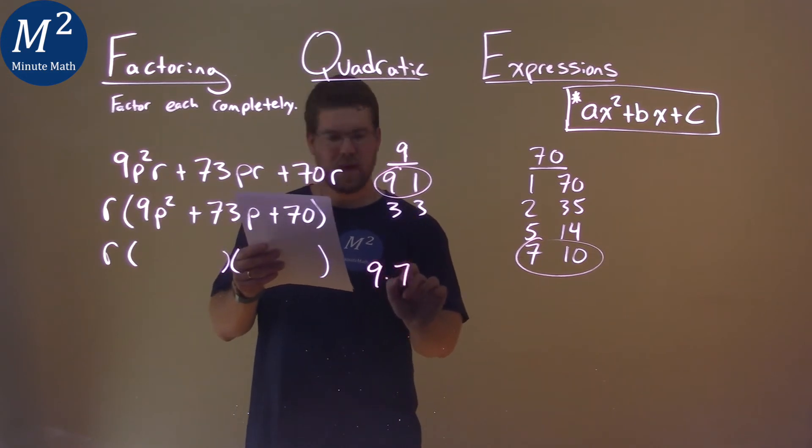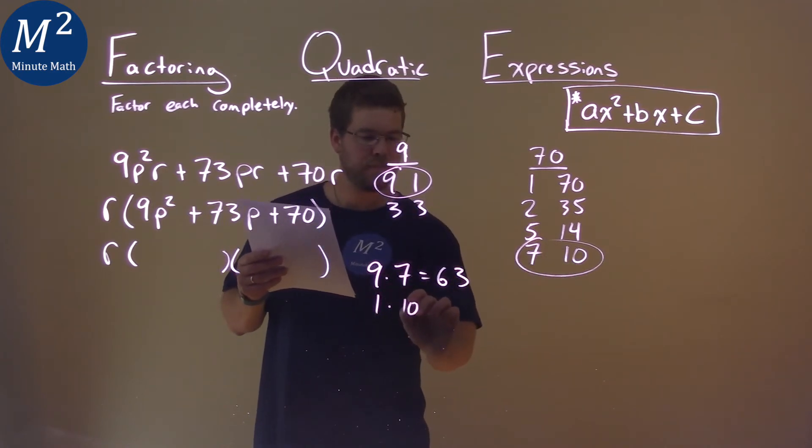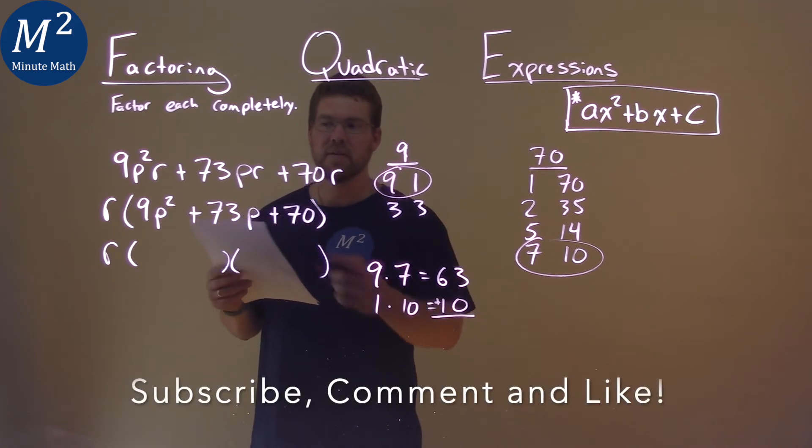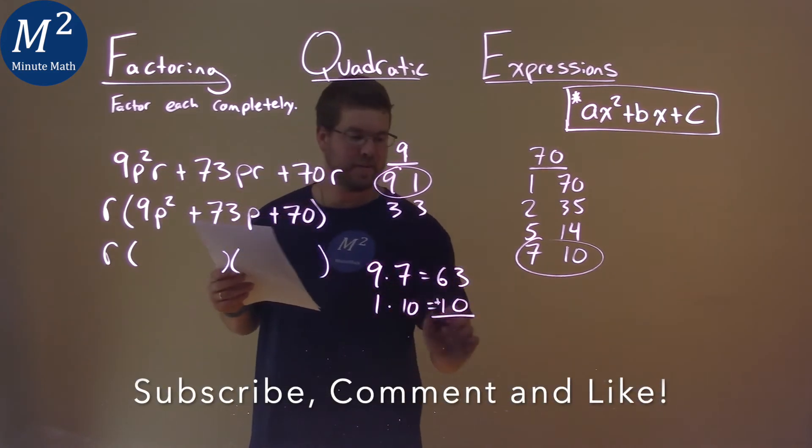9×7 equals 63, and 1×10 equals 10. When we add them together, we get 73.